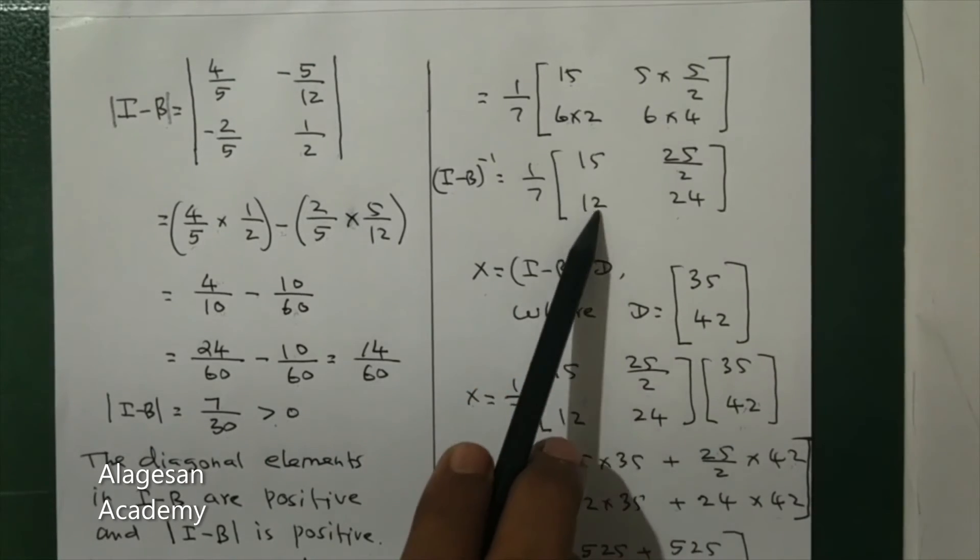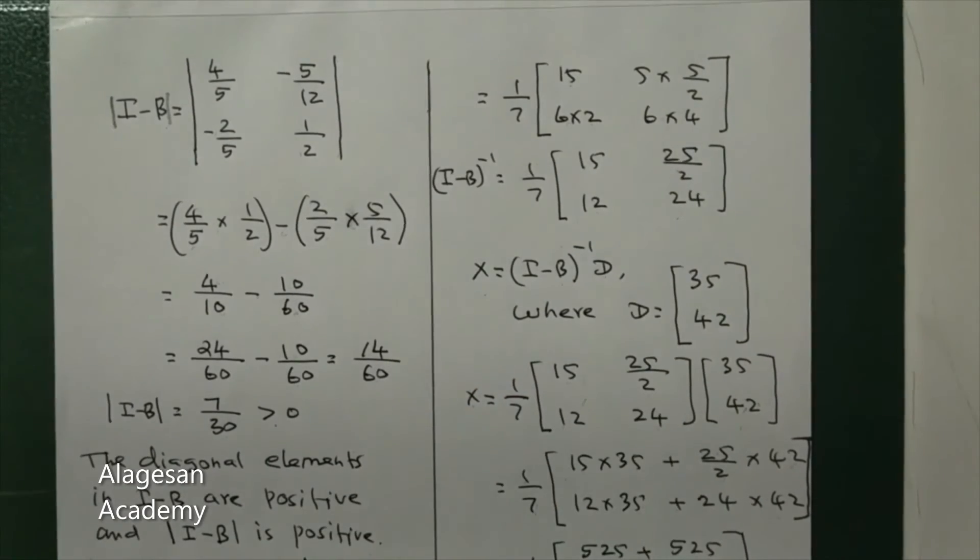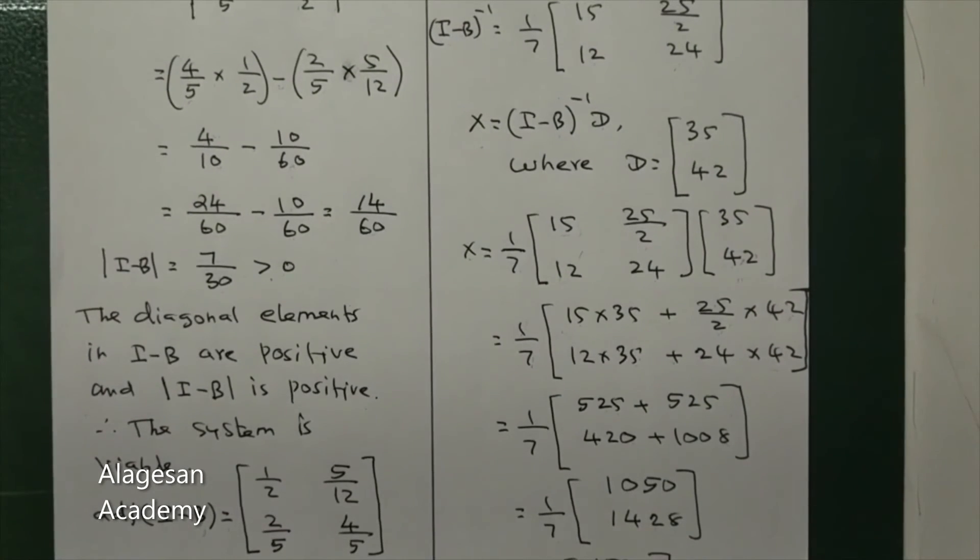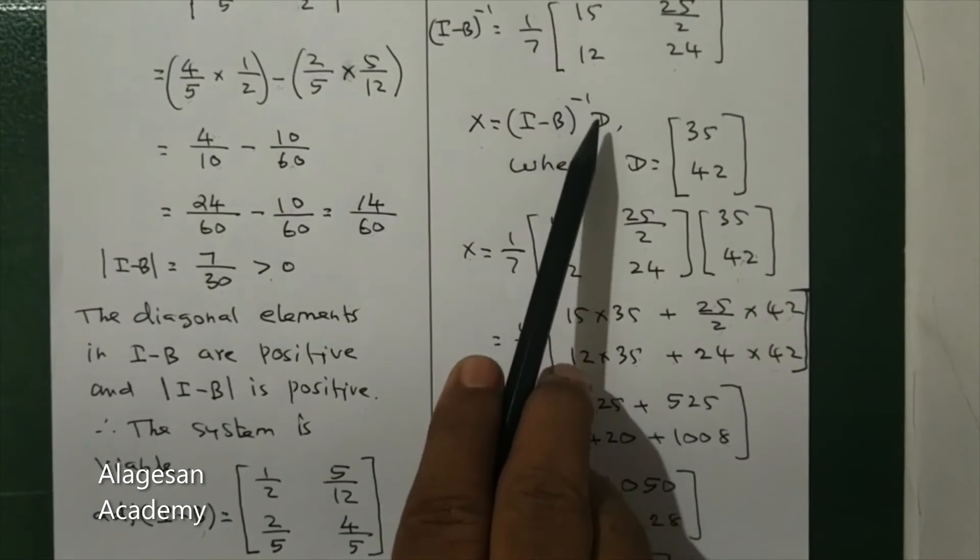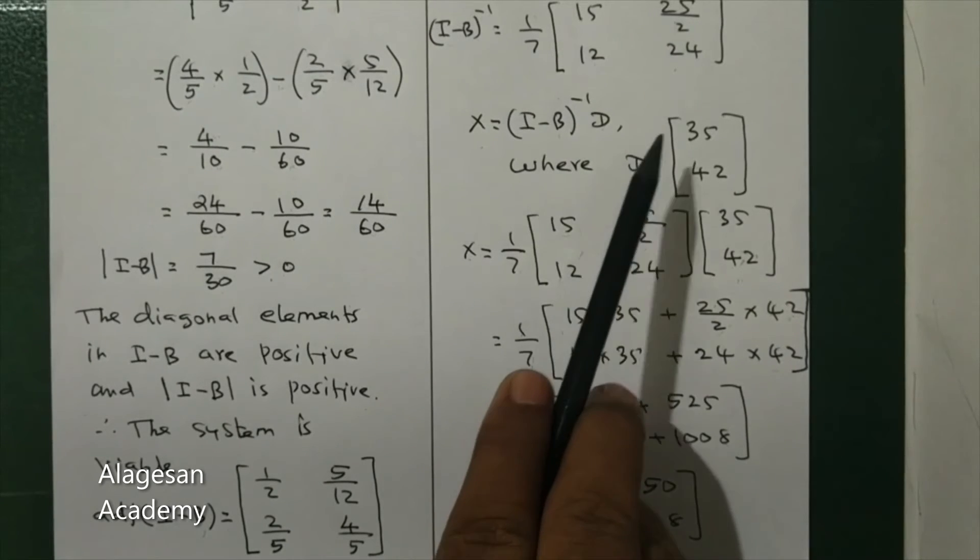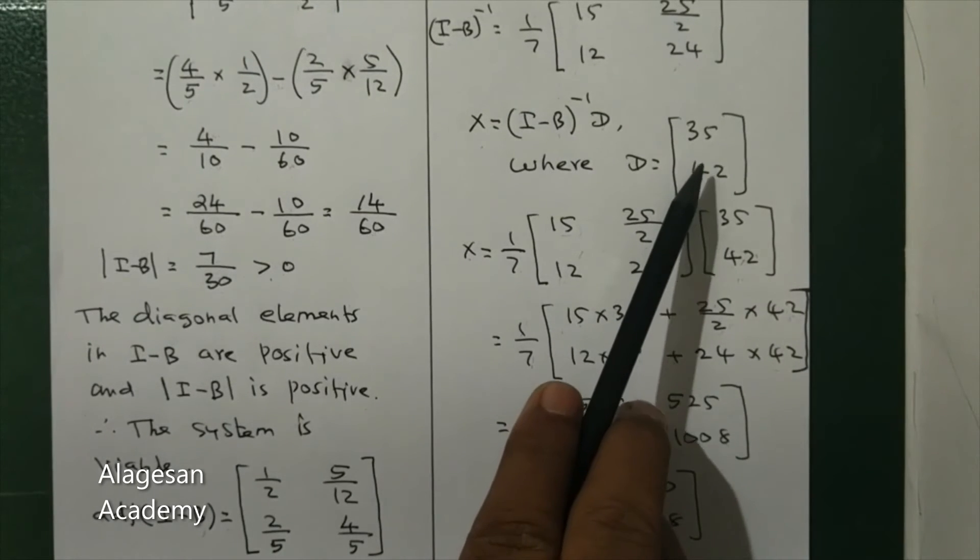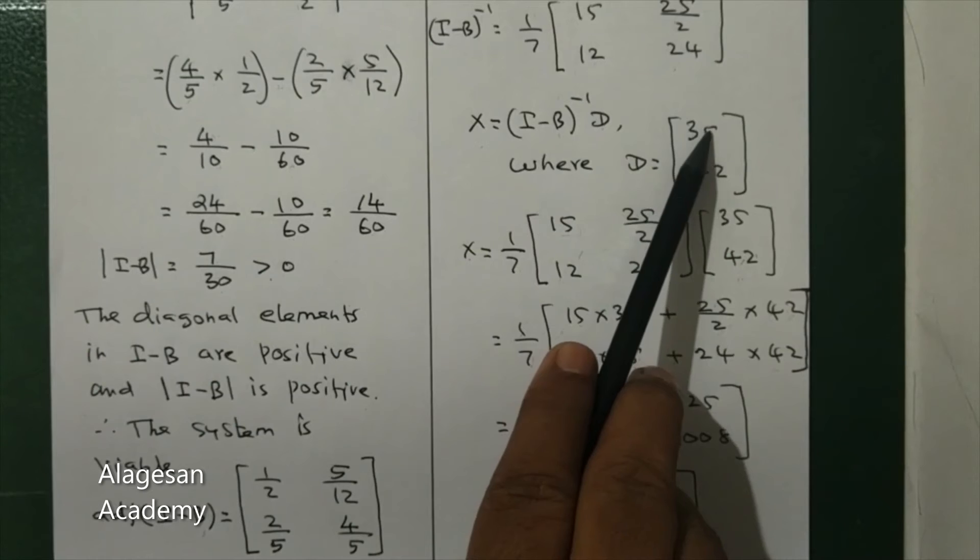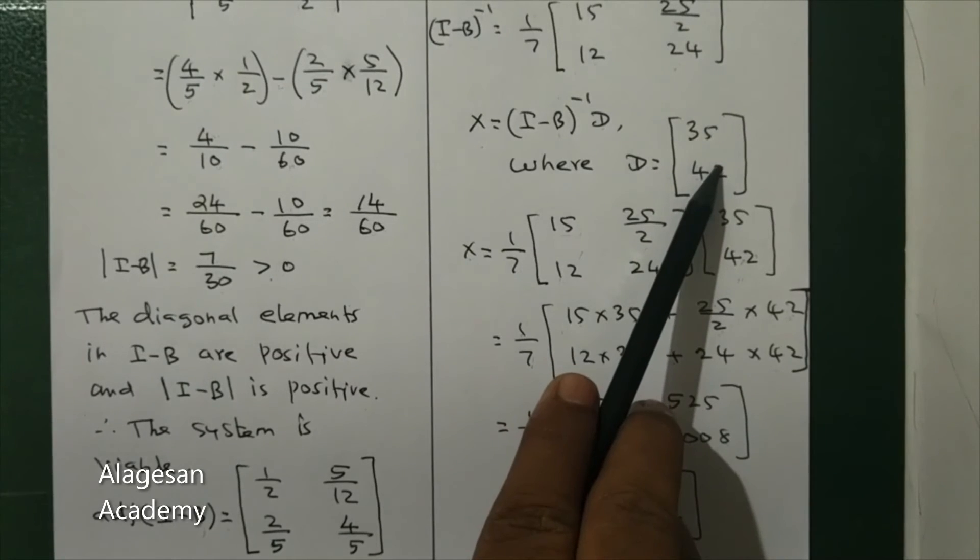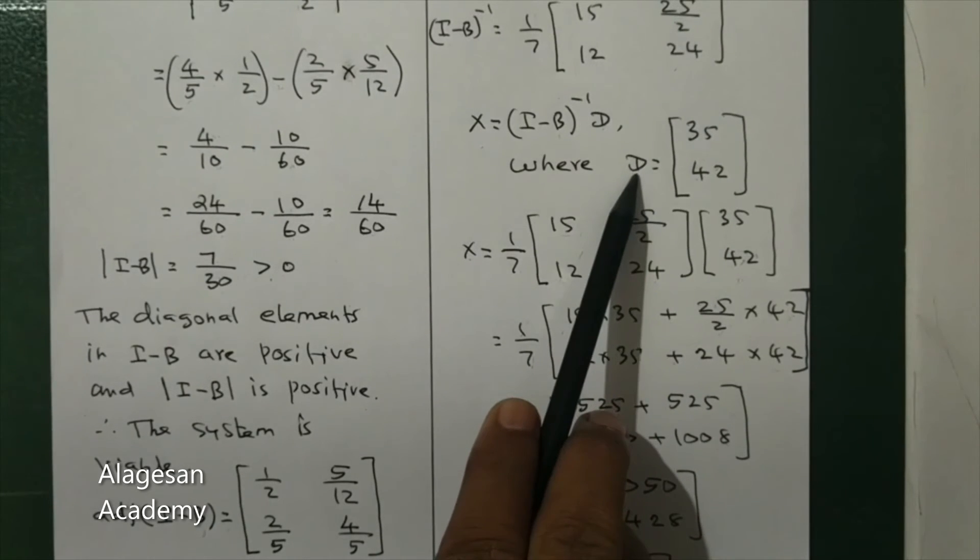Next, X: the formula is X equals I minus B whole inverse into D, where D is the final demand vector. Final demand changes to 35, 42, that is capital D.